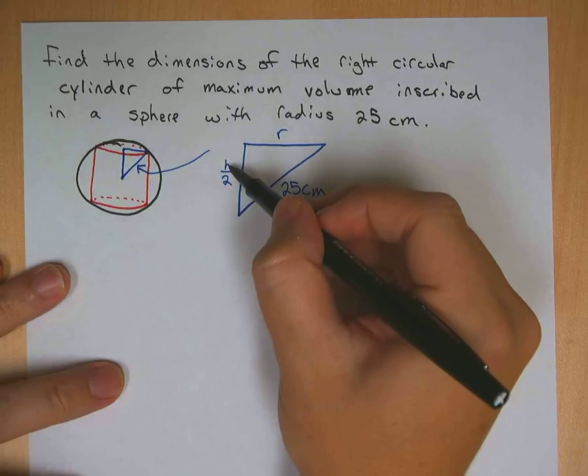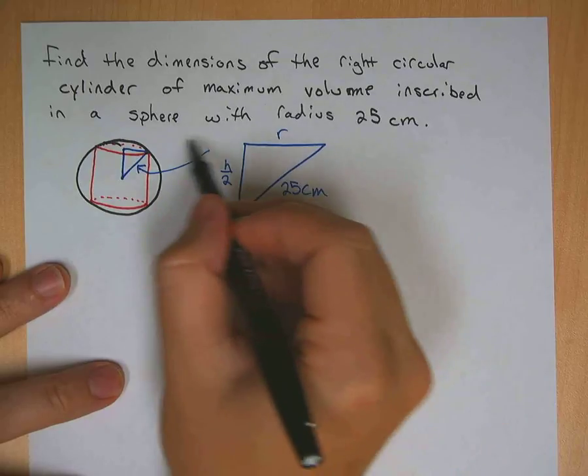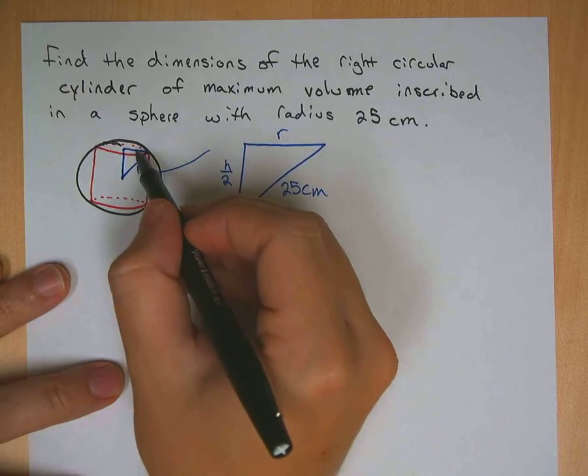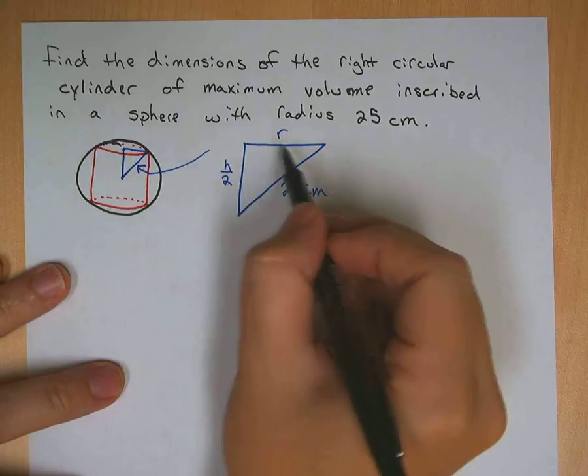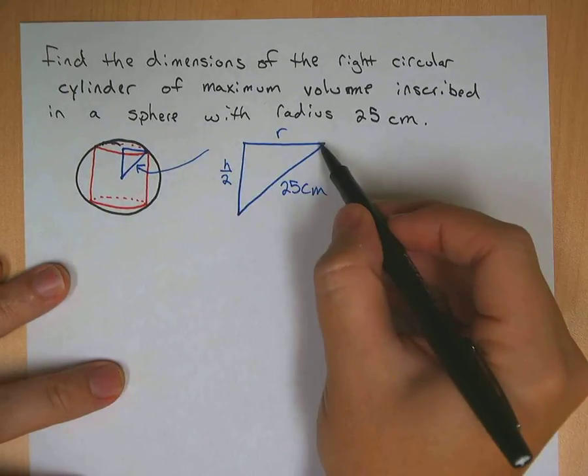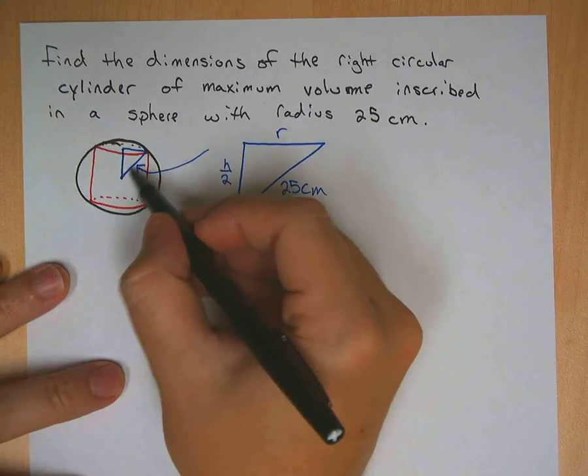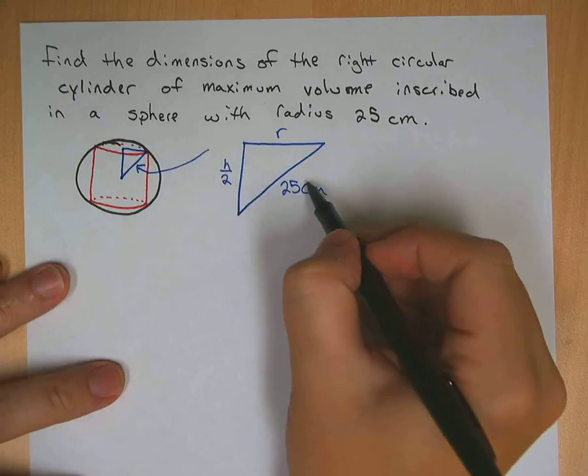So I'm going to do height divided by 2 right here. This is the radius of the right circular cylinder, not of the sphere. Okay, so we'll call that R. This distance to close up the triangle here, well, it's also the distance from the edge to the center of the sphere. So we know that that's 25.